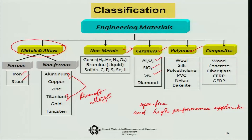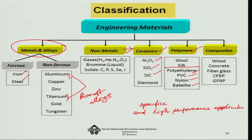In the polymer category, you can subdivide it into natural polymers like wool or silk, and polymers which are synthetic — human-created — like polyethylene. Polyvinyl chloride is used for PVC pipes, which is very popular. Nylon was one of the first synthetic polymer products, used in developing parachute suits, for example.